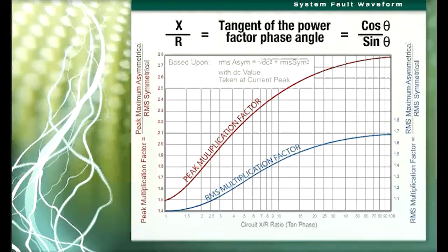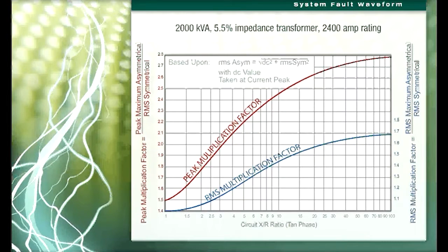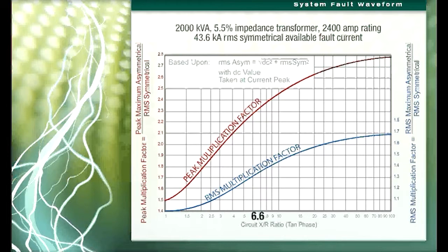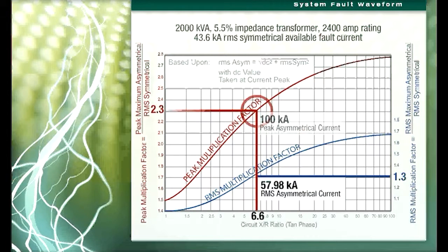Referring to the original example of a 2000 KVA, 5.5% impedance transformer with a rated current of 2400 amps, the available fault current was calculated as 43.6 kilo amps RMS symmetrical. At an X over R ratio of approximately 6.6, the asymmetrical current of 57.98 kilo amps is obtained by using a multiplier of 1.3 times the symmetrical current, and the instantaneous peak current of 100 kilo amps is obtained by using a multiplier of 2.3 times the symmetrical current.